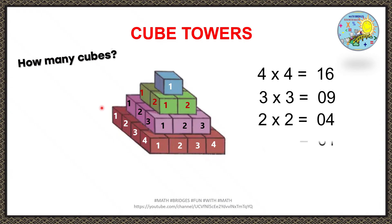Now on the top there is 1 cube. So we will write it as 1 or 1 into 1 which equals 1. Now we will add all these numbers. So 16 plus 9 plus 4 plus 1 which equals 30. Therefore, the total number of cubes in this arrangement are 30.